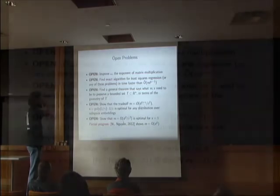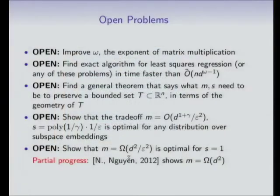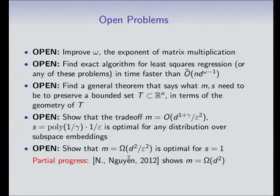First, if you improved omega — the matrix multiplication exponent — you would also improve the running time of all these algorithms. In fact, if omega equals 2, it becomes linear time.